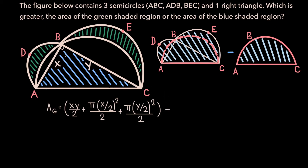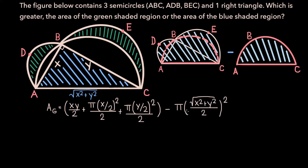To do that, we'll first need to find its radius. We know that this is a right triangle with one leg x and one leg y. So if we apply the Pythagorean theorem, we should be able to get this third side, AC, which turns out to be the semicircle's diameter. Applying the Pythagorean theorem, we get that the length of AC is the square root of x² plus y². So if √(x²+y²) is the diameter of semicircle ABC, its radius is √(x²+y²) over 2, which means that its area will be π times (√(x²+y²)/2)² over 2, since ABC is also a semicircle.